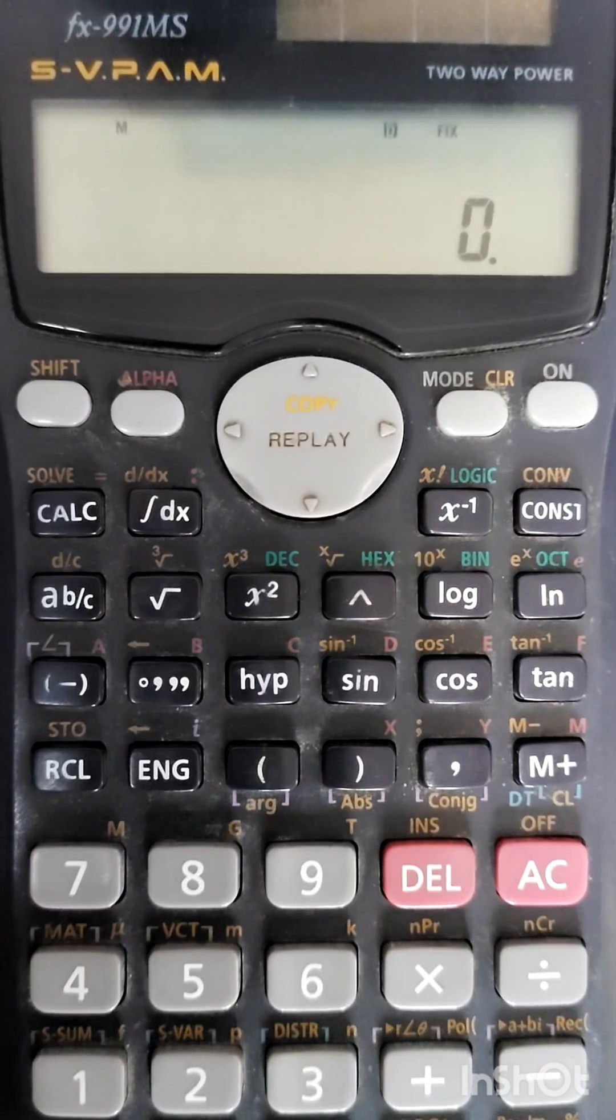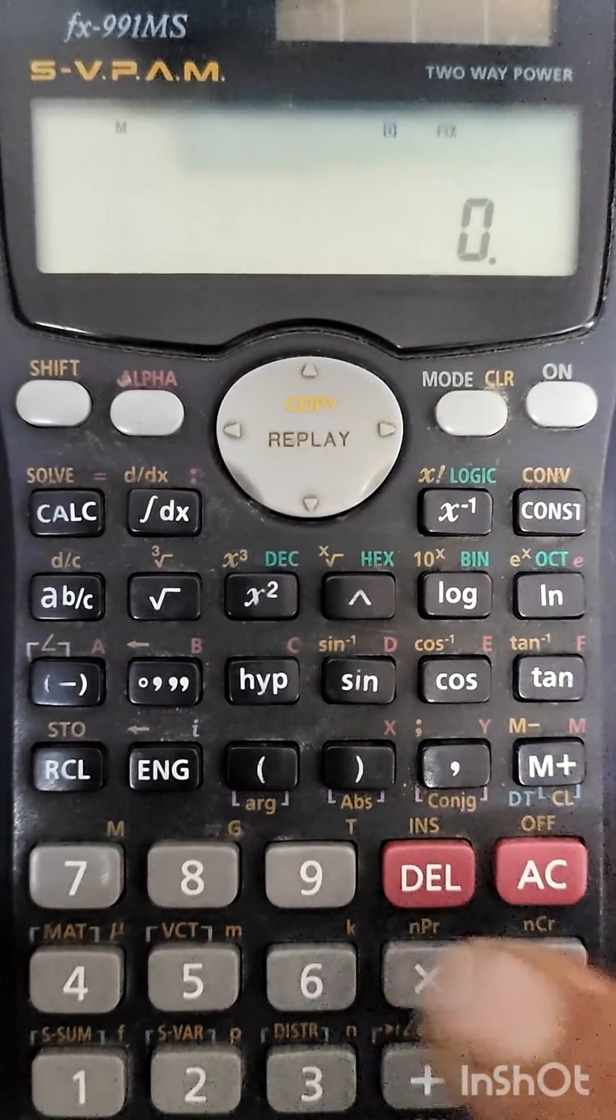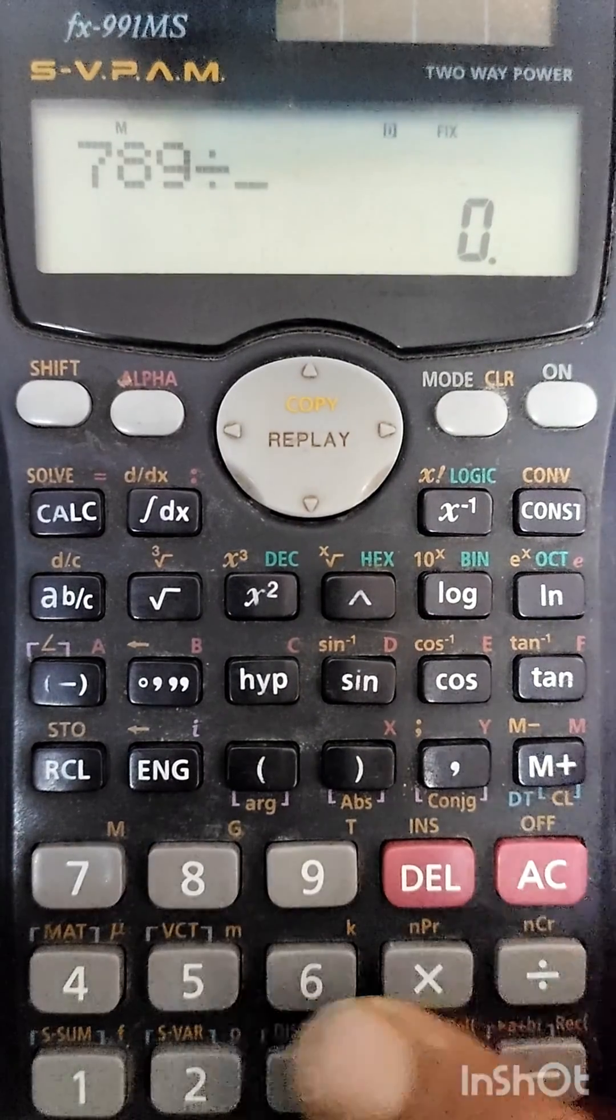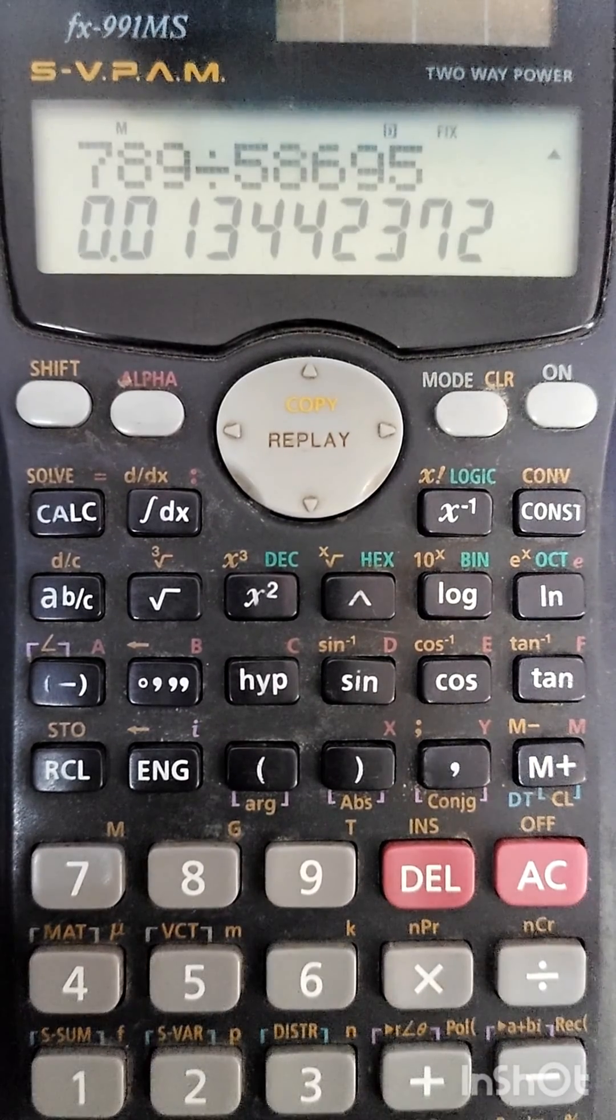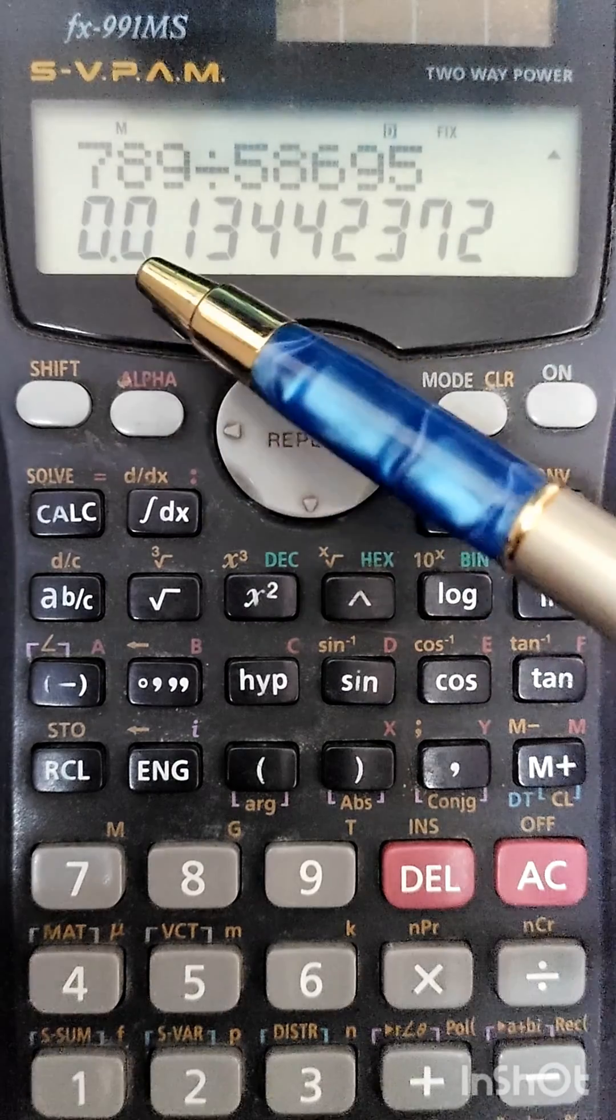So if we solve some random calculation, we see that after a decimal we will have nine values.